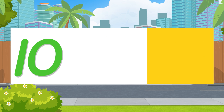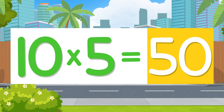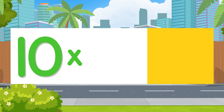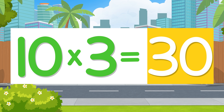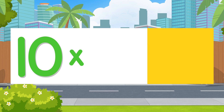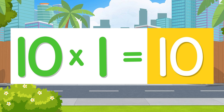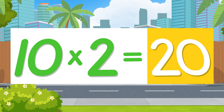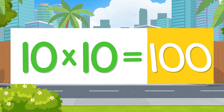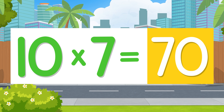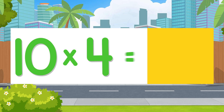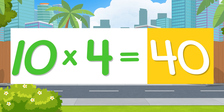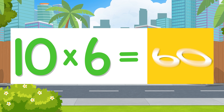Ten times five is 50. Ten times three is 30. Ten times one is 10. Ten times two is 20. Ten times ten is 100. Ten times seven is 70. Ten times four is 40. Ten times six is 60.